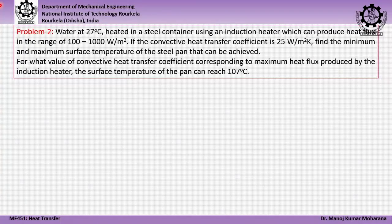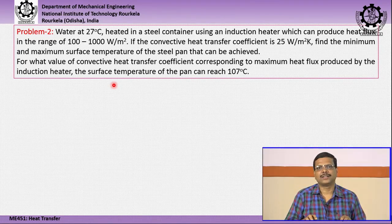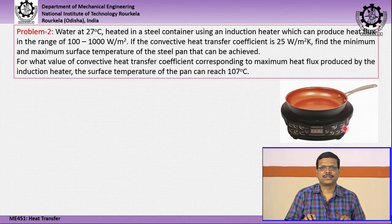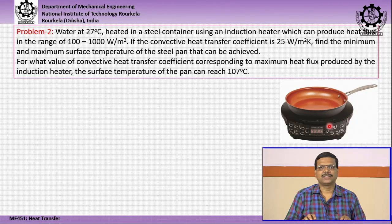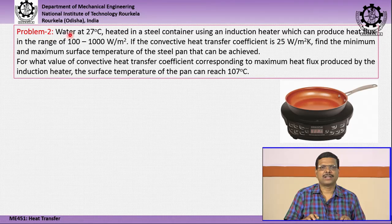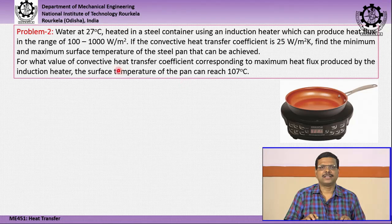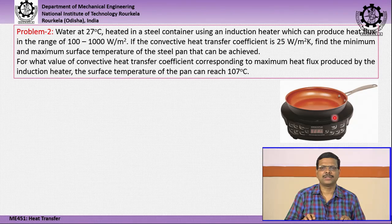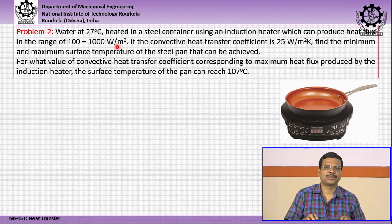First we will solve a problem on convective heat transfer. Water at 27°C is heated in a steel container using an induction heater placed below the container. This induction heater can produce heat flux in the range of 100 to 1000 W/m², meaning a minimum of 100 W/m² and a maximum of 1000 W/m².